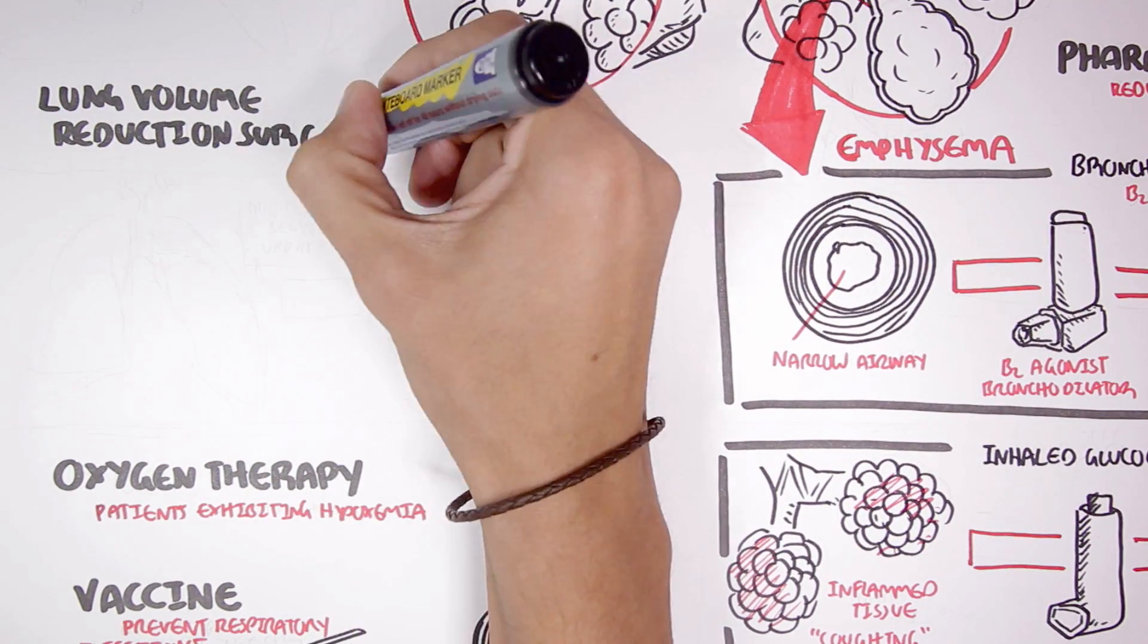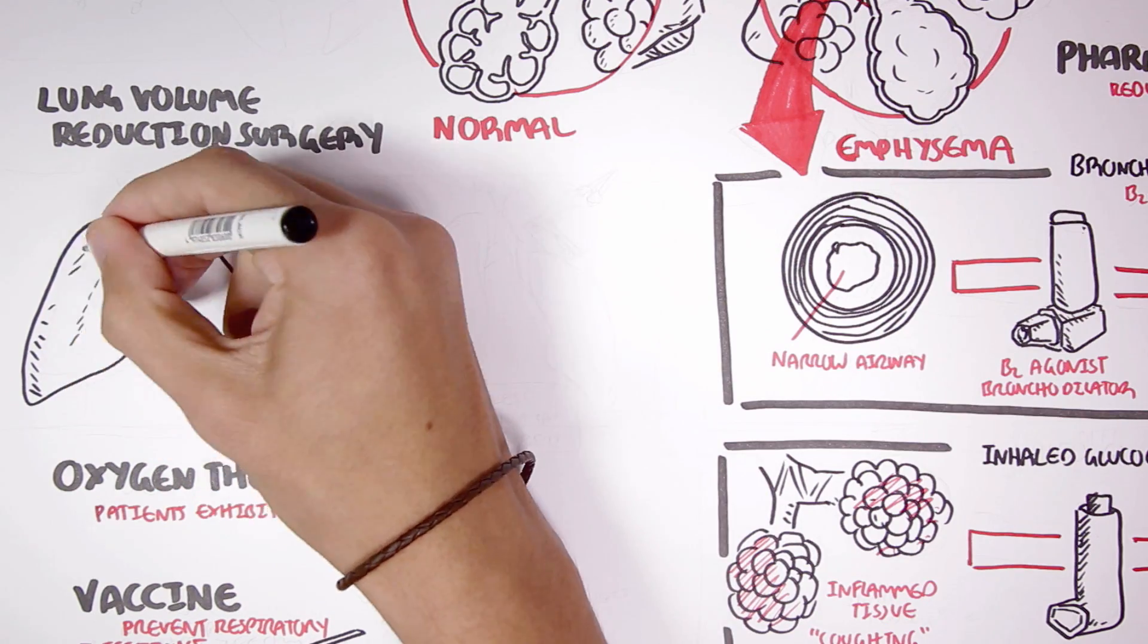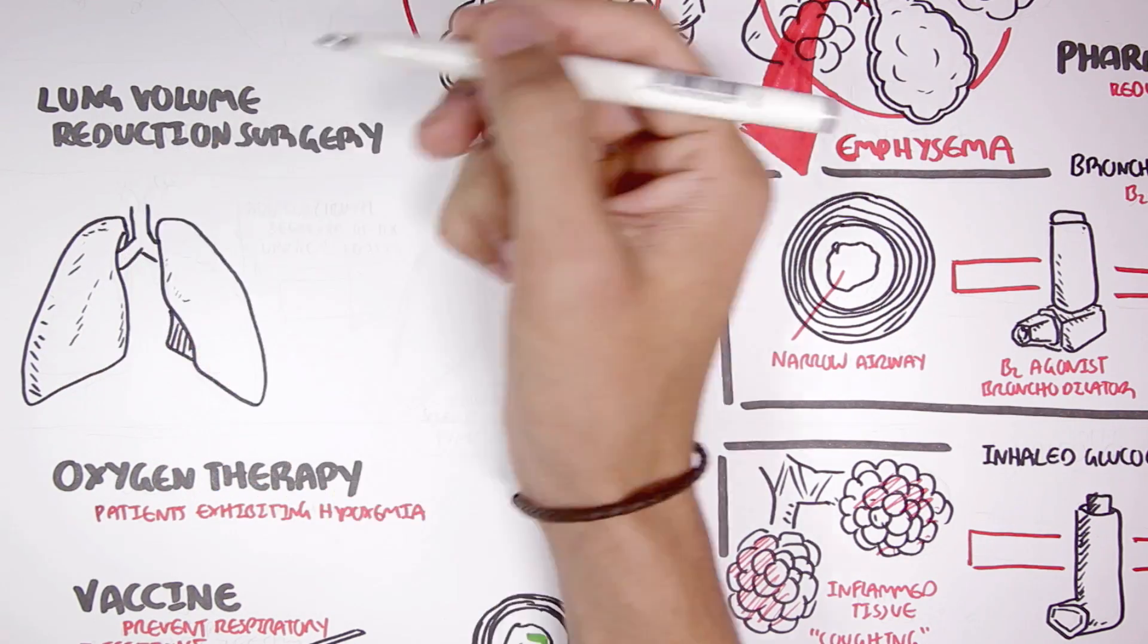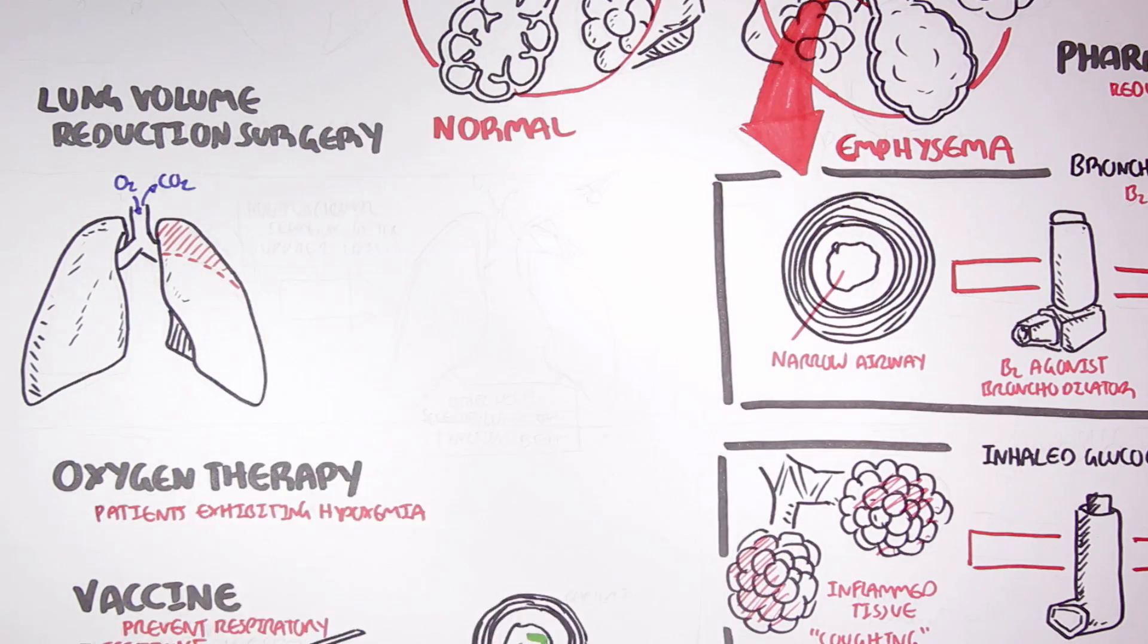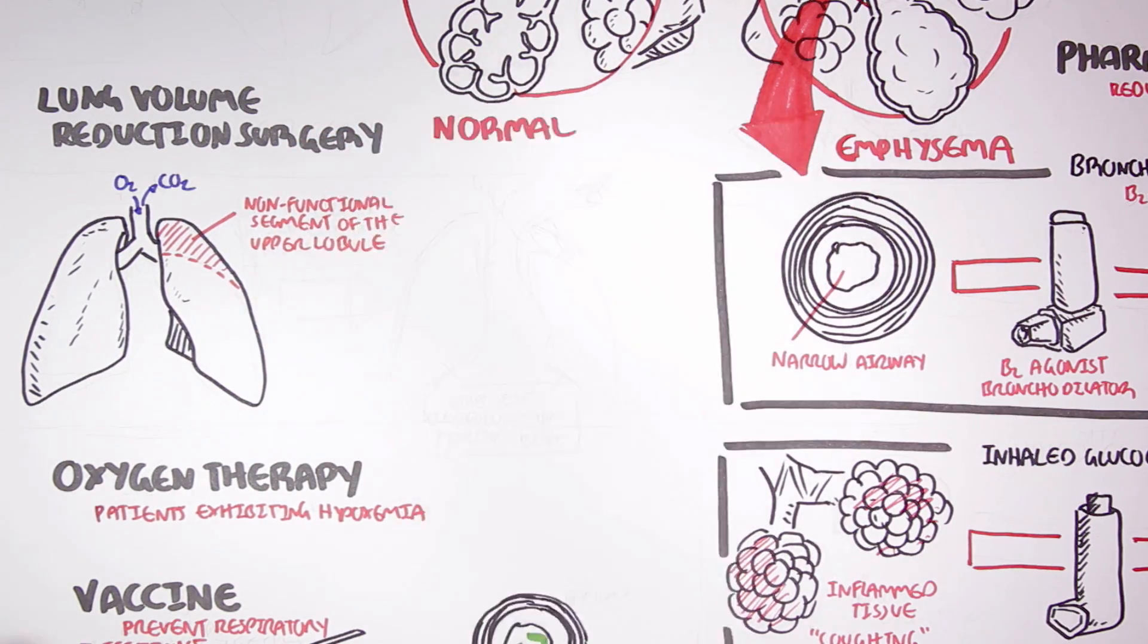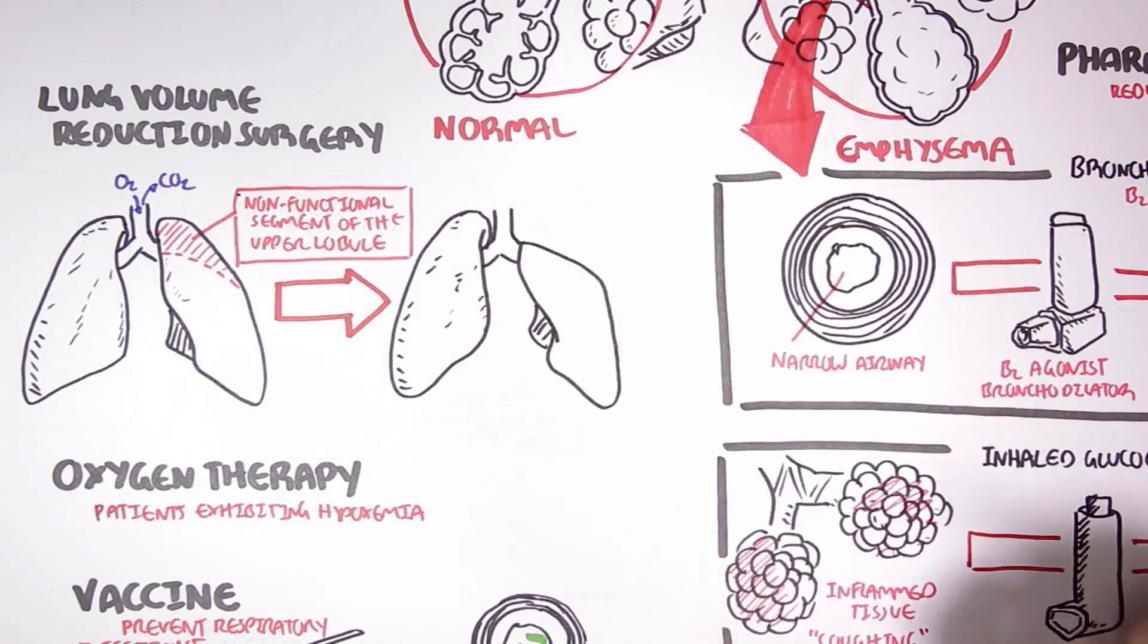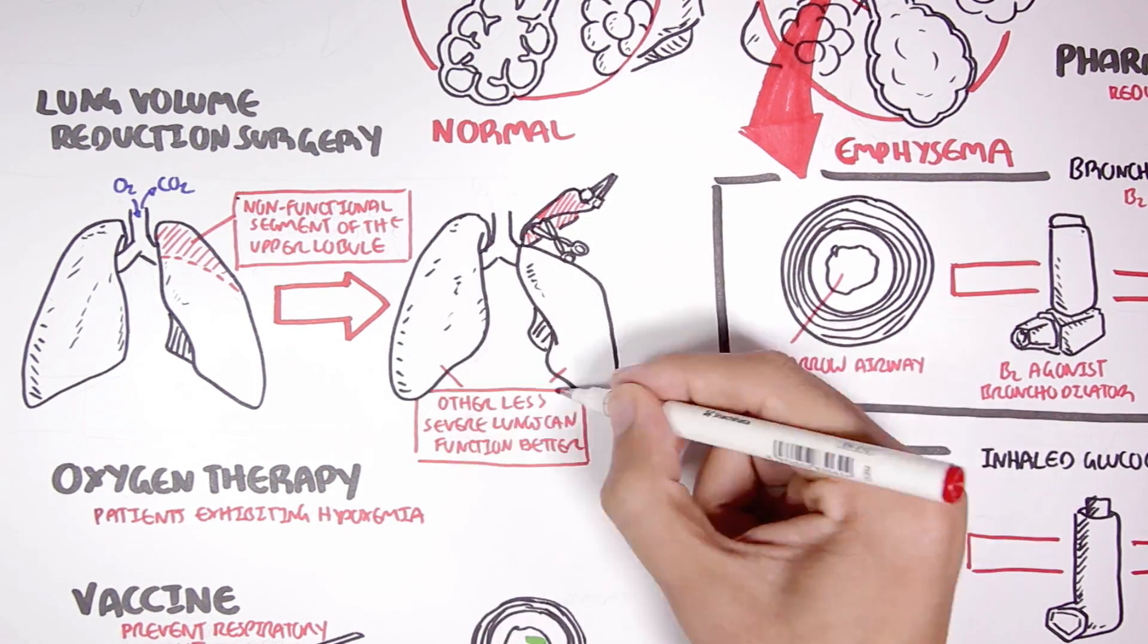Lung volume reduction surgery is used in severe cases, typically in COPD. This is where a non-functioning part of the lung is removed, for example, a non-functioning part of the upper lobule. Removing this non-functioning part of the lung will allow the other parts of the lungs to function better, despite being also damaged.